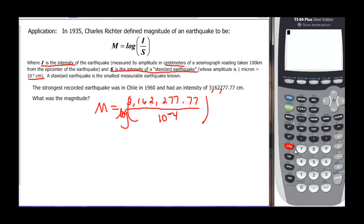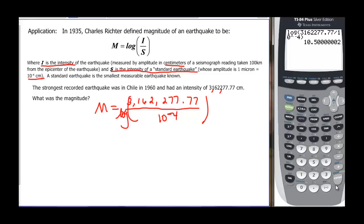We go to the calculator and compute the log of 3,162,277.77 divided by 10 to the negative 4, and we find out that the magnitude is approximately 10.5 Richters.